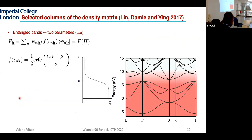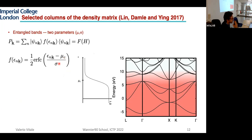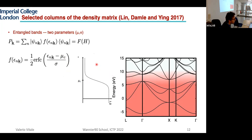Things are slightly more complicated for disentangled bands. In this case you have up to three parameters: the number of bands, plus two parameters mu and sigma which define your profile function f. There are different ways of disentangling bands. For example, if you want to Wannierize the valence manifold plus some conduction bands, you can use a complementary error function which sets to zero all elements in the density matrix above a certain energy region.